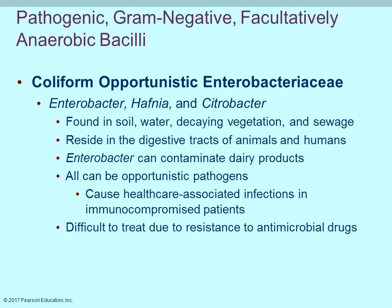Enterobacter, Hafnia, and Citrobacter are all found in soil, water, sewage, and decaying plants; they can also exist in the digestive tract of animals. Enterobacter can contaminate dairy products and becomes opportunistic when contaminated materials are consumed. Immunocompromised patients are at highest risk, and there are increasing issues with antibiotic resistance.